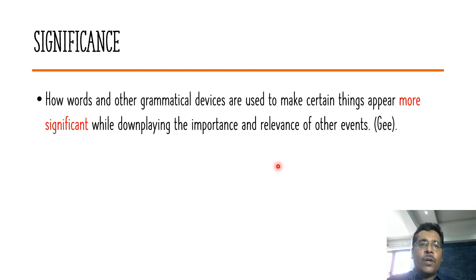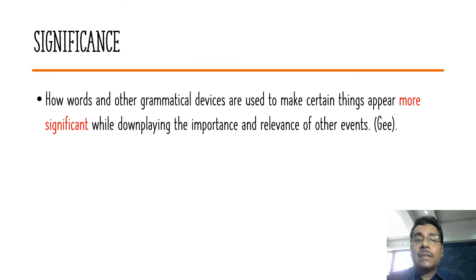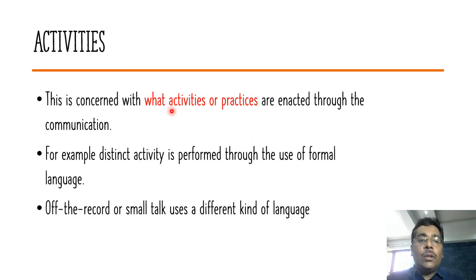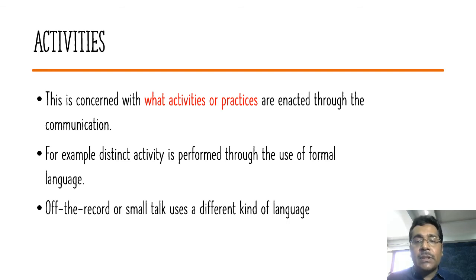One thing we look for is how words and grammatical devices are used to make certain things appear more significant while downplaying the importance of other events. We also examine what activities or practices are enacted through communication — for example, formal language performs a different activity than small talk language. The type of language used describes the activity being performed in that discursive text.